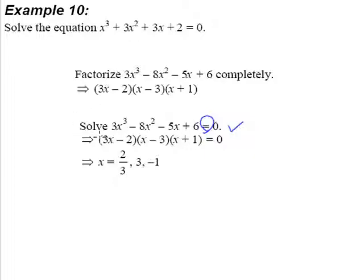So to solve an equation like this, a cubic equation, you have to factorize first and then equate to 0, and then you have to write down the values of x. So in this case, after you fully completely factorize, you have to list out the values of x. So x equals 2/3, x equals 3, x equals negative 1. Then you are saying that you have solved the equation.